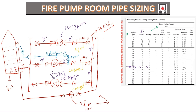Looking at the table for the relief line, we have 6 inch. The pressure relief valve, or PRV, shall be 6 inch, but the relief valve discharge line will be 8 inch as per the table. So we are going to consider an 8 inch relief valve line.